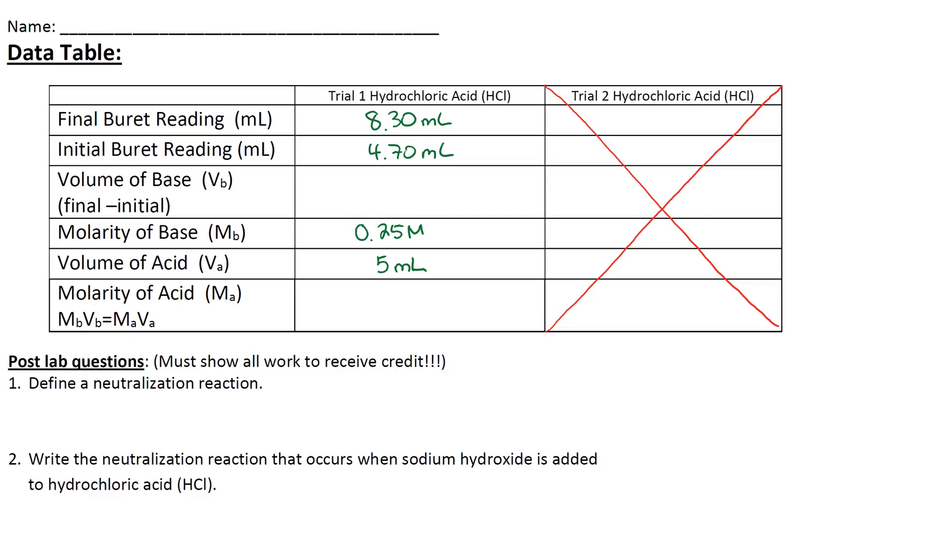This is the data table that you guys should have completed based off of the video from yesterday. In order to determine the molarity of acid, we need to be able to have that value of volume of base. So I need to take the final burette reading subtracted by the initial burette reading, and we get 3.60 milliliters. Now I have all the information I need in order to determine the molarity of the acid.